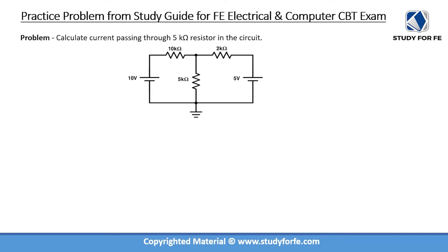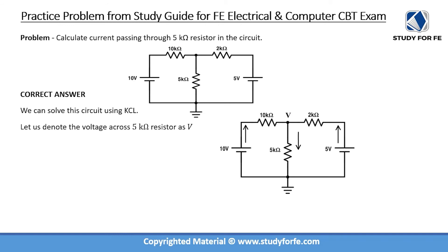Let us now take a look at a practice problem from the study guide. We are asked to calculate the current passing through the 5 kilo ohm resistor in the circuit, which has two voltage sources. Using KCL, each voltage source pumps current out into this node — the 10 volt source pushes current into the node, and the 5 volt source also pushes current into this node. The current from both sources then exits through the 5 kilo ohm resistor. You don't have to worry about getting directions right as long as you track the sign and stay consistent.